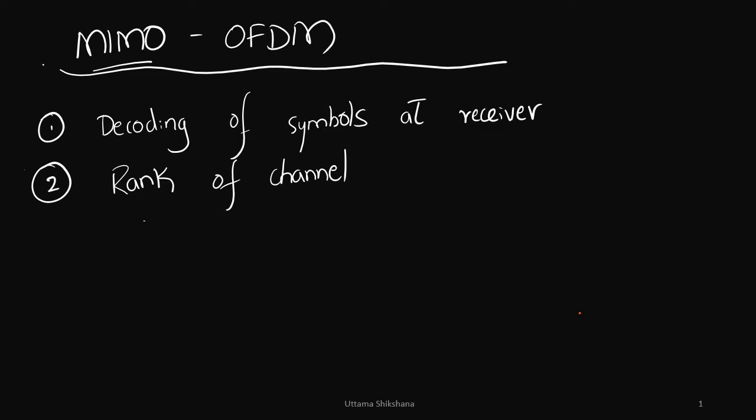Dear friends, welcome back to the channel. This is the second part in the MIMO OFDM series. In this video I want to talk about how to decode the symbols at the receiver, and I want to talk about the rank of the channel.